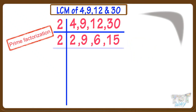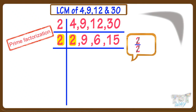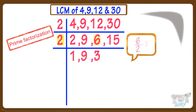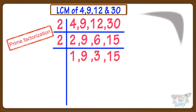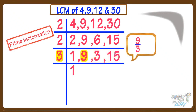Now again take 2. 2 divided by 2 equals 1. 9 cannot be divided, so write it as it is. 6 divided by 2 equals 3. 15 cannot be divided, so write it as it is. Now we cannot take 2, as not even a single number can be divided by 2. So take the next prime number, that is 3. If there is 1, simply write it as it is. 9 divided by 3 equals 3, and 3 divided by 3 equals 1. 15 divided by 3 equals 5.